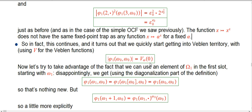If we throw away the fundamental sequences and just look at the usual ordinal height, we're getting into Veblen territory. Unfortunately, we're already using phi for our new functions. I'm going to use capital V for the Veblen function, and hopefully it won't be too confusing, because I'm not going to talk about Veblen too much.